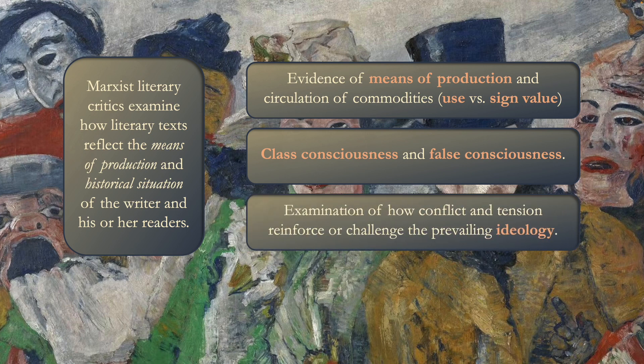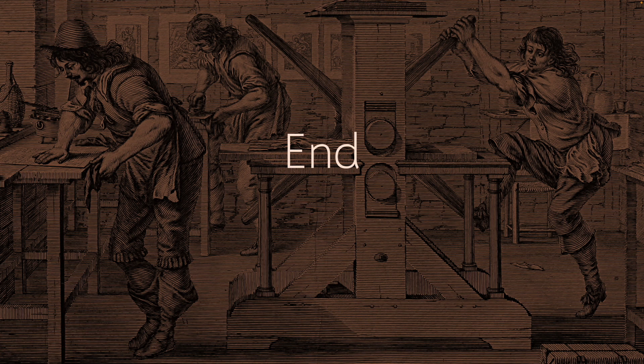Finally, the Marxist literary critic examines how conflict and tension reinforce or challenge the prevailing ideology — does a literary work maintain the status quo, or does it question, undermine, and challenge it? Critics are especially interested in how conflicts and tensions are resolved: at the end of the story, who wins and who loses? Is the class system preserved intact, or are there significant challenges to it? So here's a whole set of concepts for you to think about related to Marxist criticism. That concludes this video.